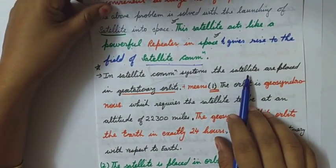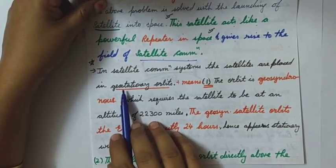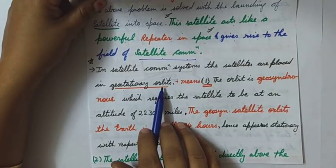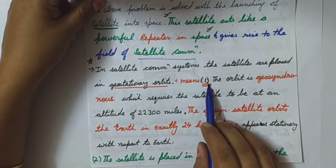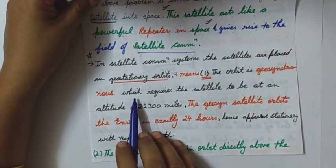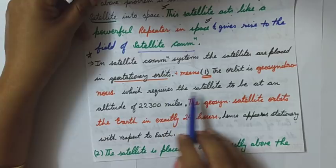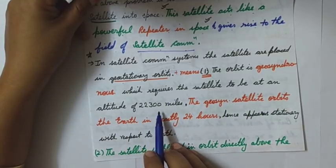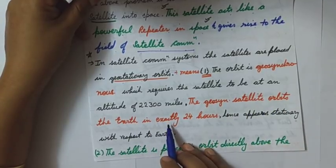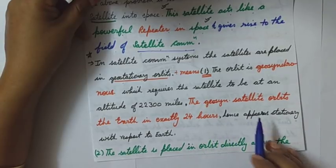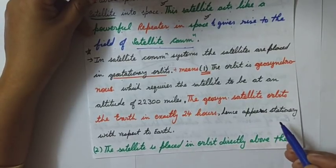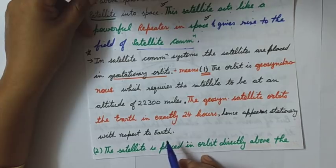In satellite communication systems, the main thing to know is that the satellites placed in the sky are geostationary — placed in geostationary orbits. A geostationary orbit must meet two conditions. The first is that the orbit is geosynchronous, meaning the satellite is at an altitude of 22,300 miles and must orbit the earth in exactly 24 hours.